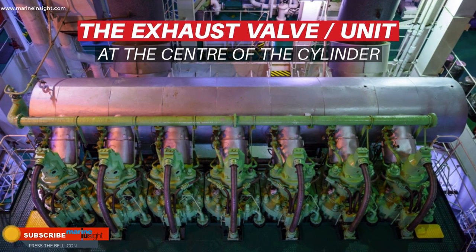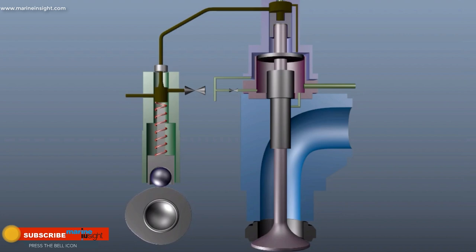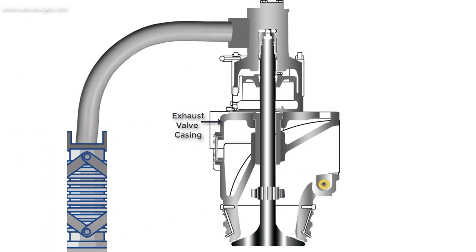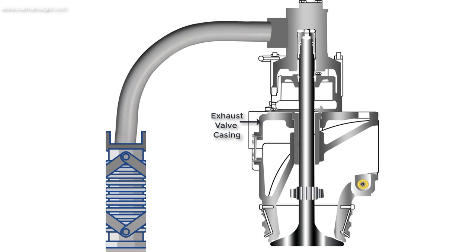The exhaust valve of the marine diesel engine consists of exhaust valve casing. The casing, which is made of cast-iron, contains different components and driving arrangement for the exhaust valve. It also has jackets through which cooling water passes for maintaining the valve temperature.